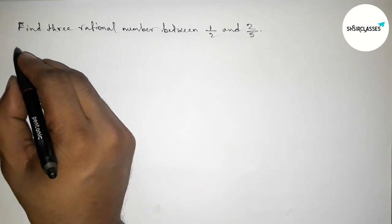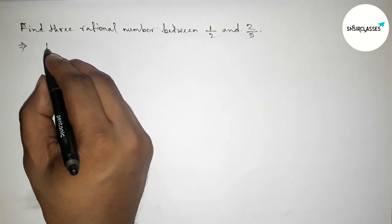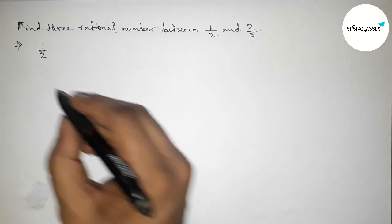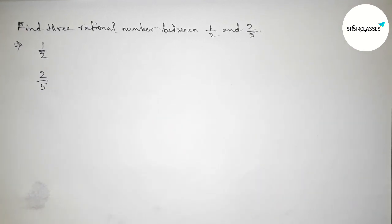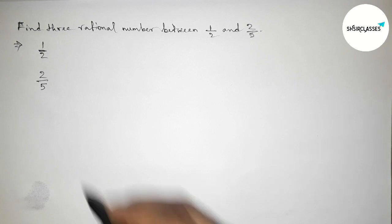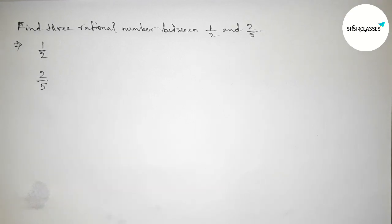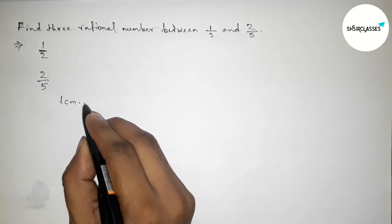First of all, let us solve this problem. The first given rational number is 1/2 and the second one is 2/5. So first write down here all the given rational numbers. Here both the denominators are not same, so we have to make equal or same denominators.